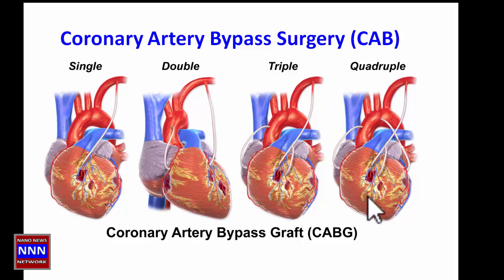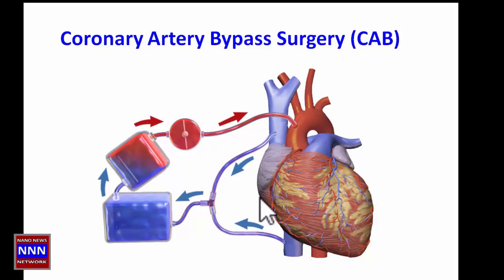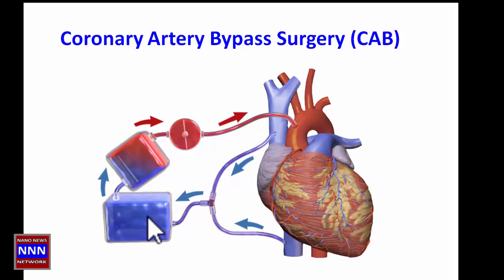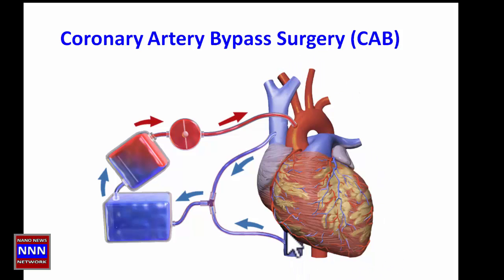When multiple arteries are blocked, the patient may end up getting four or even five bypasses. An important part of surgery is that the heart is brought to a state of rest. This is accomplished by draining blood from the upper and lower parts of the body using plastic tubes into a heart-lung machine. The heart-lung machine receives deoxygenated blood, oxygenates it — you can see the color change from purple to red — and this oxygenated blood is returned to the aorta to supply the rest of the body, maintaining adequate circulation and blood pressure.